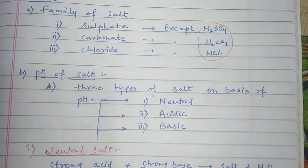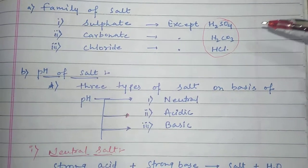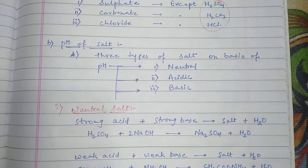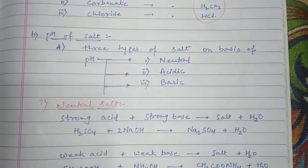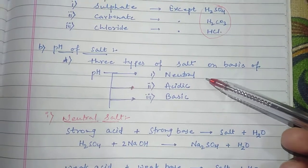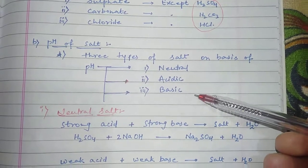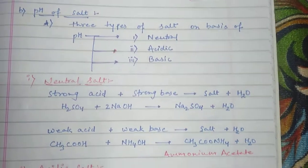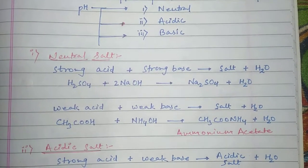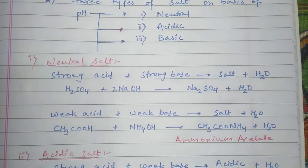There are some exceptions to sulfate — those are actually acids, as mentioned earlier. Now we will talk about the pH of the salt. On the basis of pH, there are three types of salt: the first is neutral, the second is acidic, and the third is basic. We will discuss how to differentiate a neutral salt from acidic and basic salts.